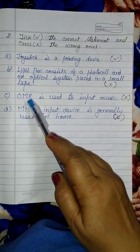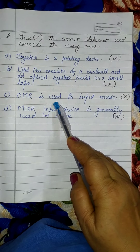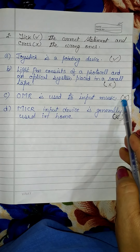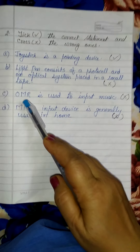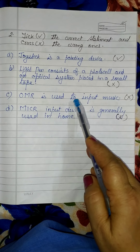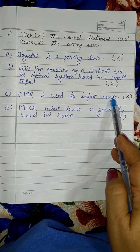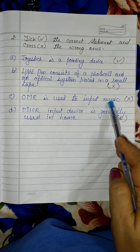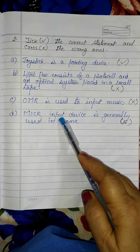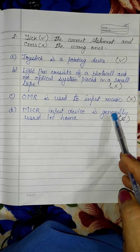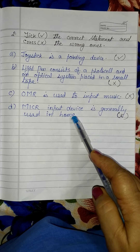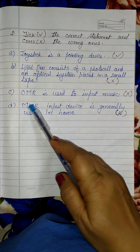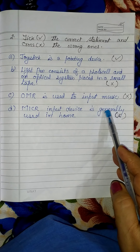Number 3: OMR is used to input music. Is it true? No, it is false. Put a cross mark or write false. OMR is used to read input data, not input music. Number 4: Micro input device is generally used in home. This is also false — put a cross mark or write false.